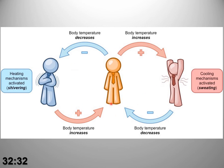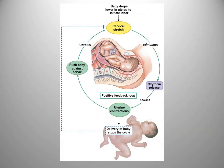Body temperature is a classic example of negative feedback. The body temperature decreases; we have a perception, an integration, and a response to raise body temperature back, and vice versa. Blood pH, blood glucose, oxygen and CO2 concentrations are all examples of regulated variables that we frequently use negative feedback for. Many of our endocrine systems as well — though here I'm going to show an endocrine system that is positive feedback.